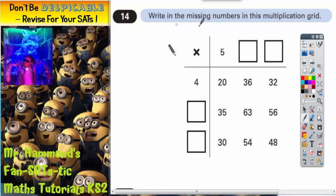Question 14, write in the missing numbers in this multiplication grid. Let's have a look. In this column, every number is in the five times table. So 20 is 4 times 5, so the question is